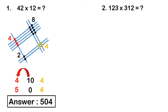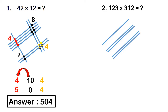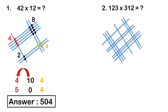Now let's solve it. The first digit is 1, so draw 1 line. Then draw 2 lines for the second digit, and 3 lines for the last digit. For the second number, the first digit is 3, so draw 3 lines in the opposite direction. Then draw 1 line for the next digit, and 2 lines for the last digit. This is the complete line structure for this problem.